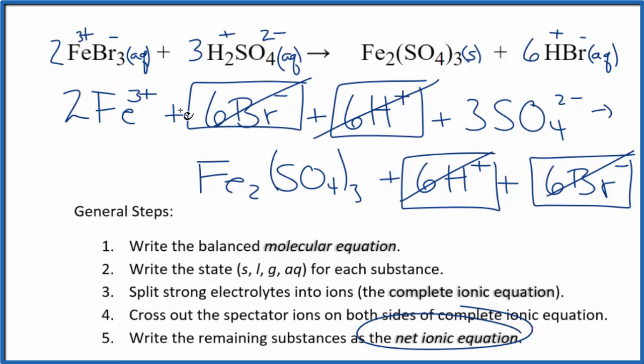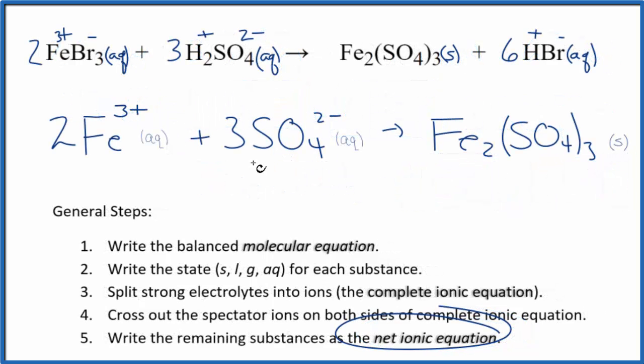I'll clean this up, write the states. We'll have our net ionic equation. So this is the balanced net ionic equation for this iron 3 bromide and sulfuric acid. You'll note, charge is conserved. We have 2 times 3 plus, that's 6 plus, 3 times 2 minus, 6 minus. That all adds up to zero, net charge of zero here. This is a neutral compound, net charge of zero.